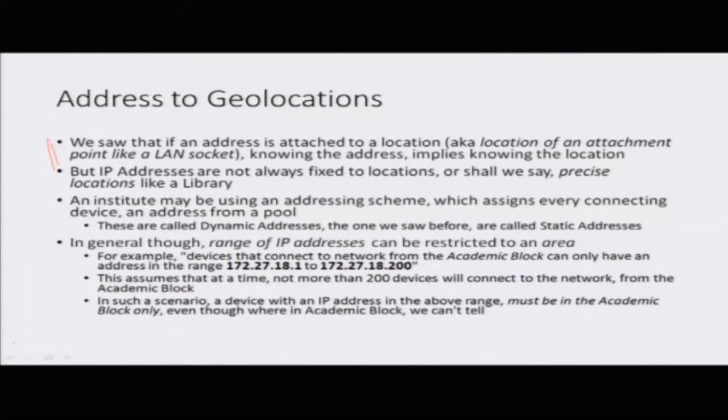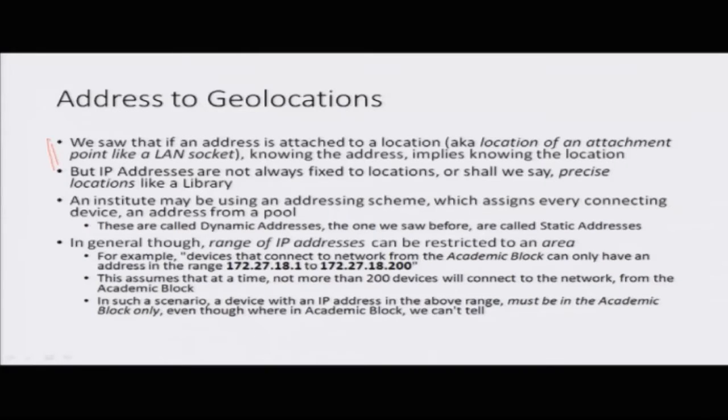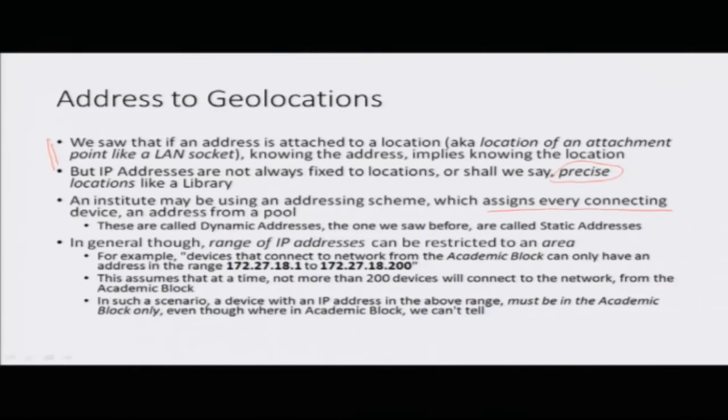If an address is attached to a location, we can know the location of a device with that address. However, IP addresses are not always fixed to precise locations like a library socket. In an institute, an addressing scheme may assign every connecting device an address from a particular pool. So instead of fixing particular addresses to particular sockets, we just give devices an address from a given pool — this is not a hard fixing of addresses.